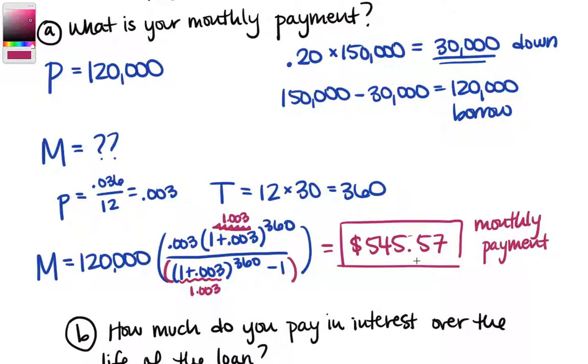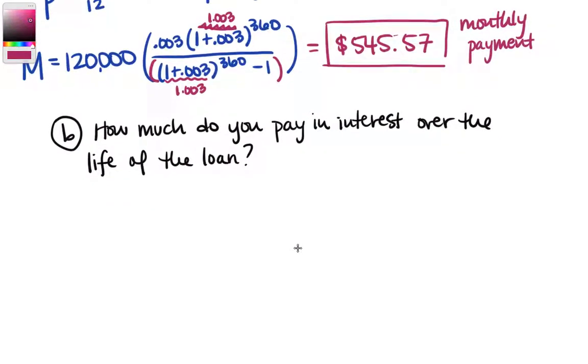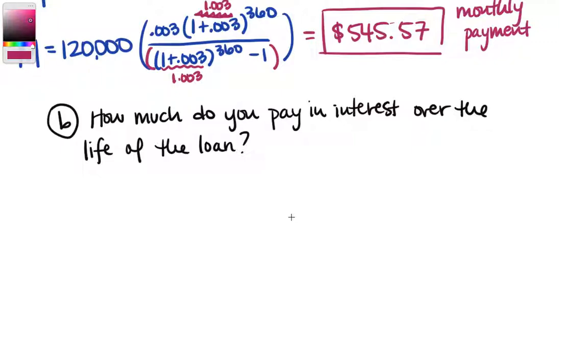You might be thinking to yourself, $545.57 for a $150,000 house, depending on your housing market, that could be like a three-bedroom house in a perfectly nice neighborhood. So housing payment, not so bad. Well, let's go ahead and look at how much interest do we pay over the life of the loan?